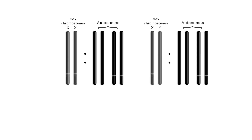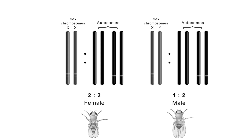Sex determination in Drosophila is determined by the ratio of X chromosomes to the number of sets of autosomes, that is X to A. If the ratio is 1 (2 X chromosomes to 2 sets of autosomes), development is set towards femaleness. If the ratio is 0.5 (1 X chromosome to 2 sets of autosomes), development is set towards maleness.